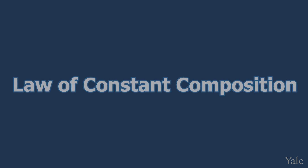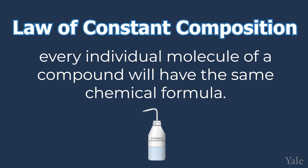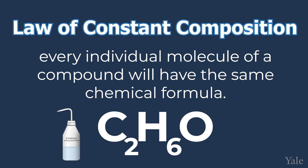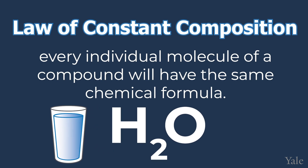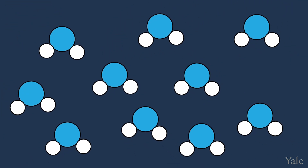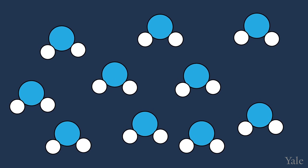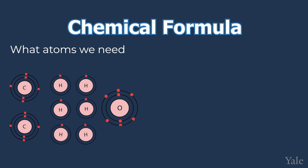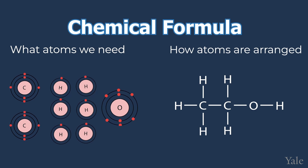The law of constant composition tells us that every individual molecule of ethanol will have the same chemical formula, C2H6O, while every single molecule of water will have the formula H2O. It doesn't matter if you have one molecule or a trillion molecules — they will always have the same formula. Now, the chemical formula tells us what atoms we need to make a compound, but it does not tell us how the atoms are arranged.